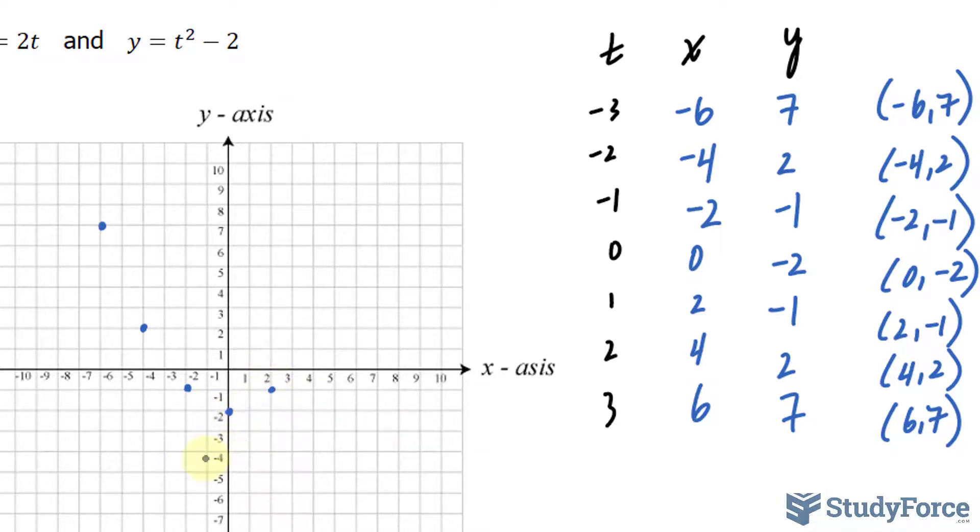This point appears to be our vertex for this parabola. Then we have 4 and 2. And finally 6 and 7.